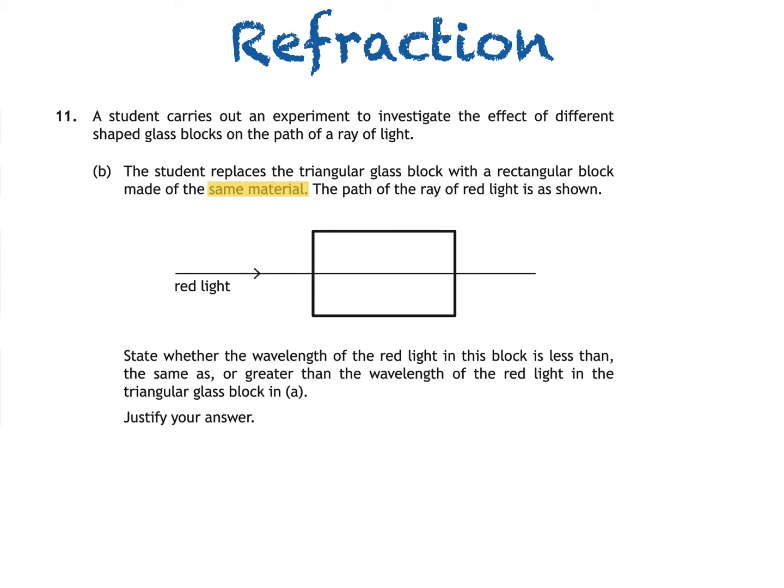So when the light passes from air to glass, it slows down and the wavelength decreases. Since the material of this rectangular block is the same as the triangular block before, the speed will decrease just as much as it did before, and the wavelength will decrease to the same value it did in the triangular block. So we can say that the wavelength in this block is the same as in the other, because both blocks are made of the same material.